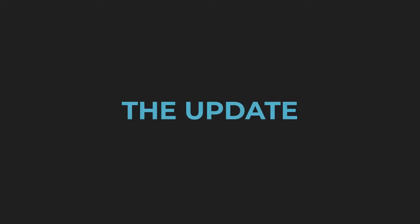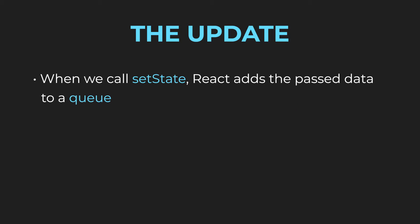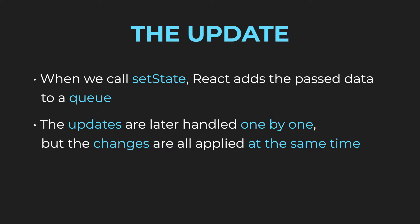Now to the update itself. When we call setState and pass in the new state or the update function, React takes that data and adds it to a queue. Eventually, the renderer decides to handle the updates and goes through them one by one. However, the changes are all applied at the end, at the same time. The changes are flushed to the DOM at once.